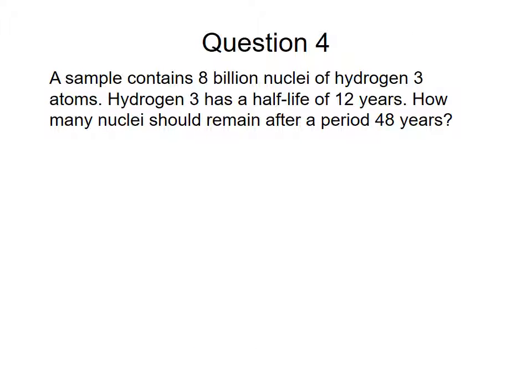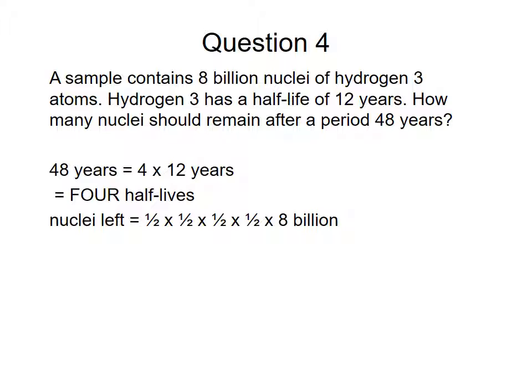Question number 4. A sample of 8 billion nuclei of hydrogen-3 atoms. So hydrogen-3 has a half-life of 12 years. How many nuclei will remain after 48 years? So 48 years is 4 times 12. That's four half-lives. So half times a half times a half times a half times 8 billion, which is 500 million.